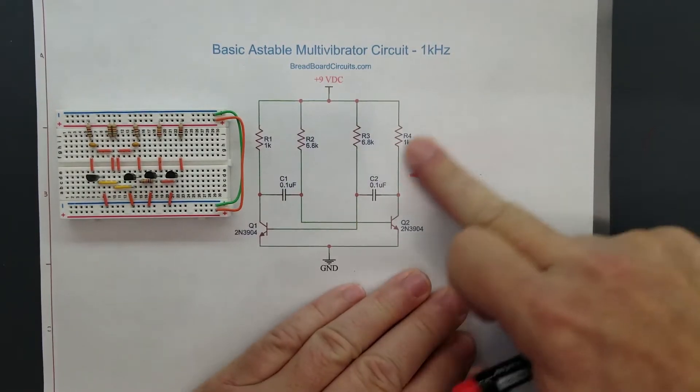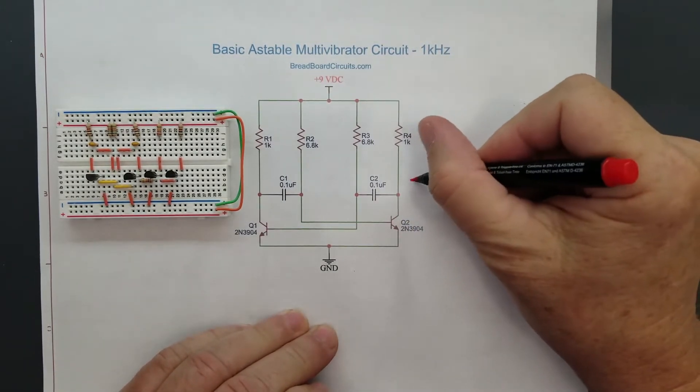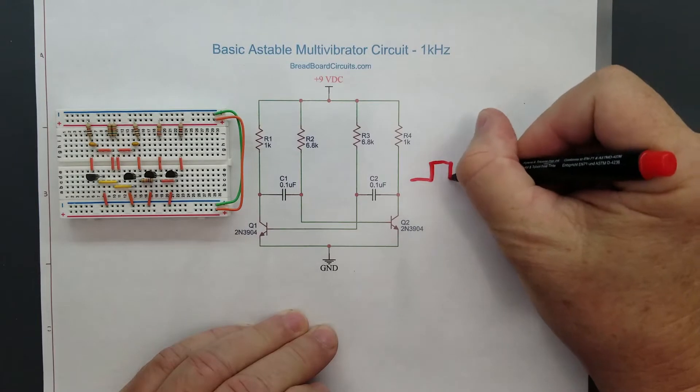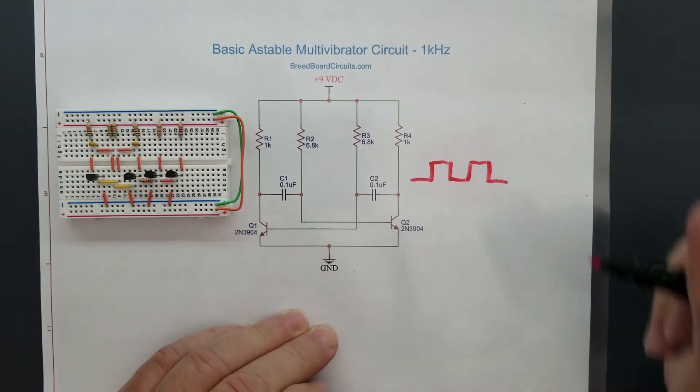So what we're going to attempt to do here is modify this circuit so that we have a nice, clean square wave. And it's actually very easy to do.